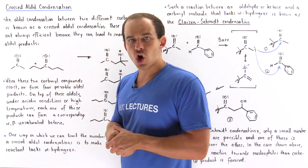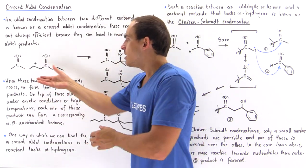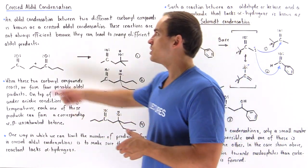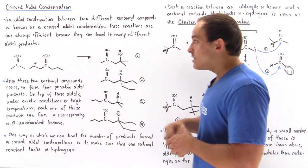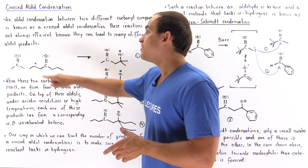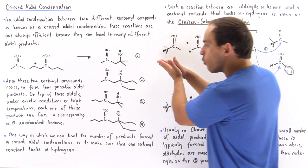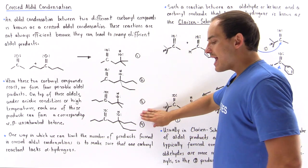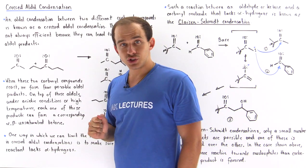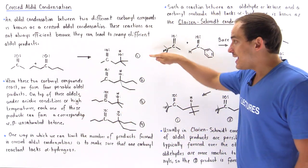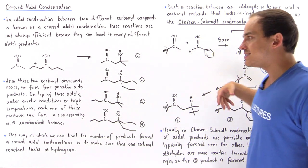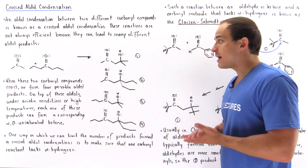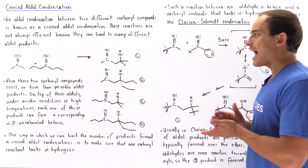Let's consider these two ketones — two different carbonyl compounds reacting in a condensation manner. This is by definition the crossed aldol condensation. Either one can act as the nucleophile, and there are four possibilities for our aldol products: one, two, three, and four. On top of that, if we are under acidic conditions or have a high temperature, each one of these aldol products can undergo dehydration to form the alpha, beta unsaturated ketone compounds. So we see many different types of products can actually form.